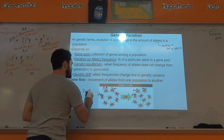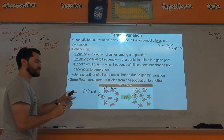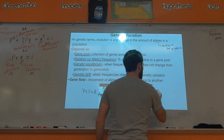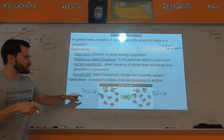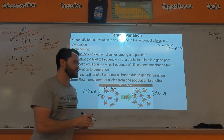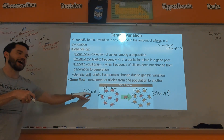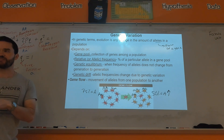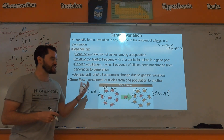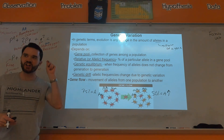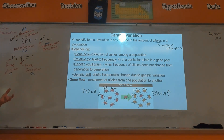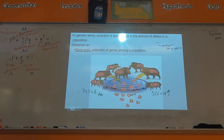Gene flow is the idea of alleles moving from one population to the next. Say 75% of the alleles in one population are the dominant allele, but over here maybe 50% are dominant. If a beetle moves from this population to that one, you're going to increase the percentage of the dominant allele, since that beetle is more likely to carry it. Think of beetles not as organisms but as collections of alleles — that'll make more sense when we go over Hardy-Weinberg.